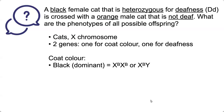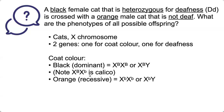Starting with coat colour: black is dominant, and these are the two genotypes that will give you a black cat — this is the female and this is the male. Note that if the female is heterozygous, she will not be black; she will be a mixture of black and orange because of X-linked inactivation. Orange is recessive, and these are the genotypes that will give you an orange cat — this is the female and this is the male.